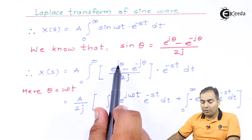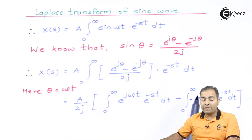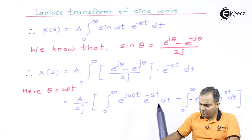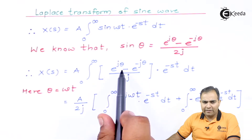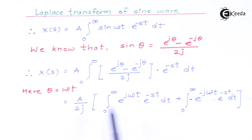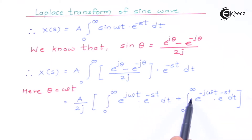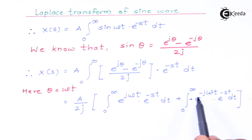We now have e^(jωt)·e^(−st) and e^(−jωt)·e^(−st) as two separate terms with a minus sign between them, giving two different integrations. Taking the minus sign inside the bracket: the first integration is ∫₀^∞ e^(jωt)·e^(−st) dt, and the second integration is ∫₀^∞ e^(−jωt)·e^(−st) dt.